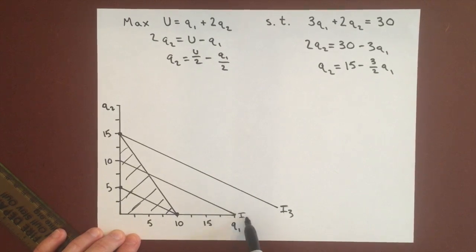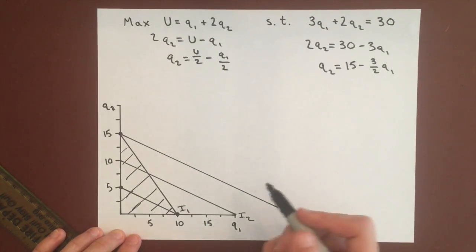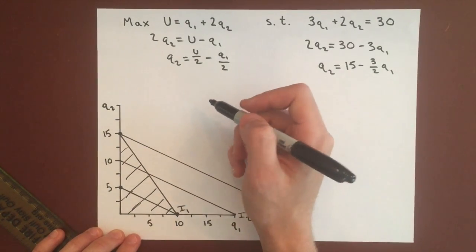So the ideal situation for us will be buying 15 units of good 2.